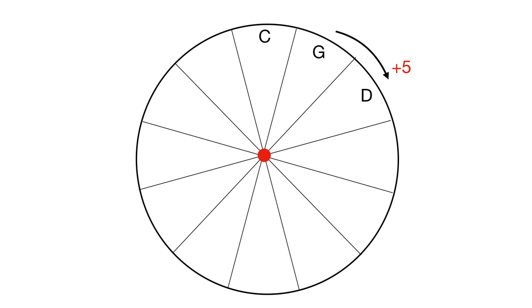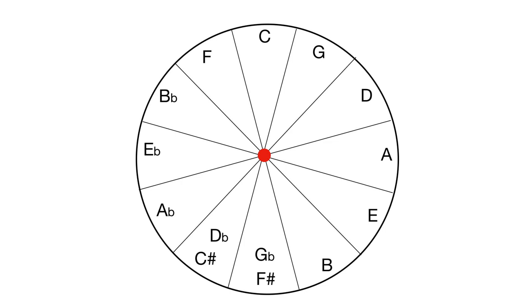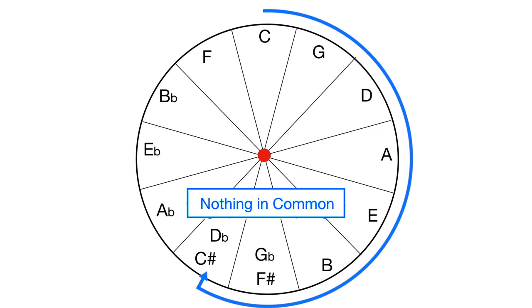What's going on is that as you go round the circle, the keys become more and more different until, by the time you get to the bottom, they've got almost nothing in common. Whereas the ones at the top have got lots in common. And that's the point, because if you're an improvising musician, composer, or songwriter, you need to know what keys are close to each other.